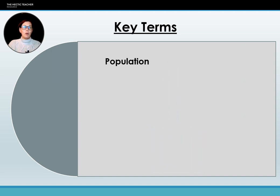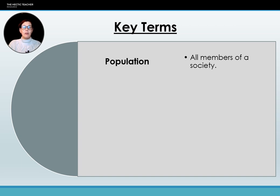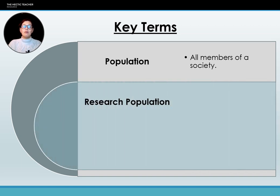The first term we need to think about is population. Population refers to the members of a society — every member regardless of their social groupings or personal groupings. Every person in a society is considered part of the population. Researchers can't study everybody in the population because that's too unwieldy and a logistical nightmare. So this is the research population — the specific group that is going to be studied by the researcher.